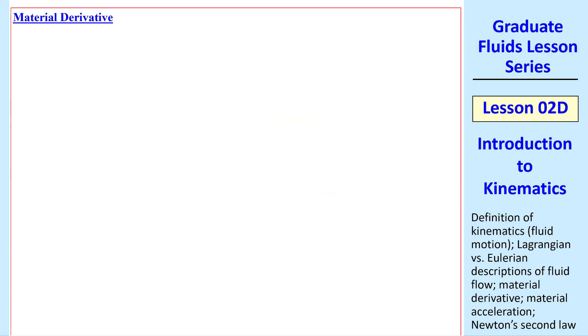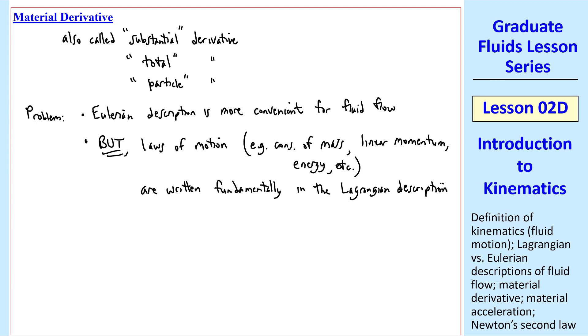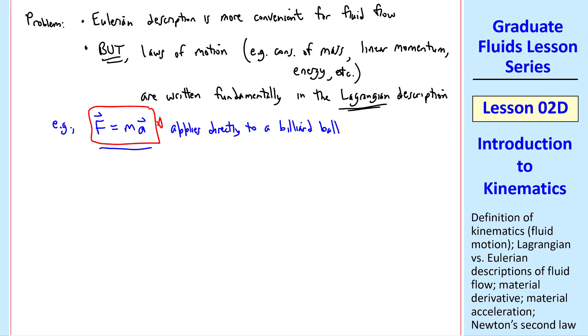Now let's talk about the material derivative, also called the substantial derivative, total derivative, or particle derivative. The problem is that the Eulerian description is more convenient to describe fluid flows. But laws of motion, example, conservation of mass, linear momentum equation, conservation of energy, etc., are written fundamentally in the Lagrangian description. For example, Newton's second law, the well-known equation f equal ma, applies directly to a billiard ball. This is the equation we would use to analyze billiard balls hitting each other. With this as our problem,